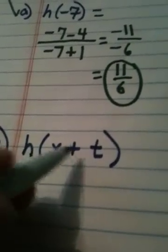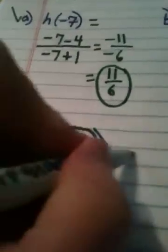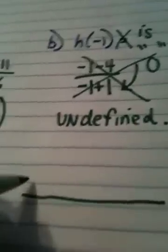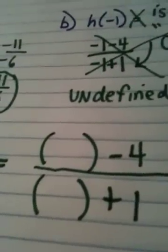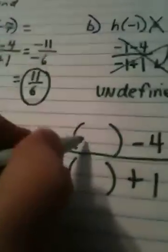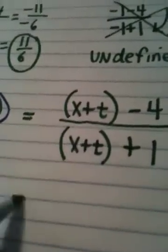Okay, my last example here, I'm finding h of x plus t. Now, this is my input. So, in the numerator, I have x minus 4. In other words, I have input minus 4. In the denominator, I have input plus 1. That's my original, how my original function is defined for the output, to get the output. What am I putting in? Again, I'm putting in x plus t.